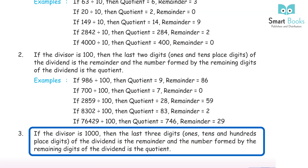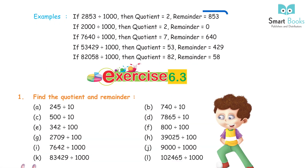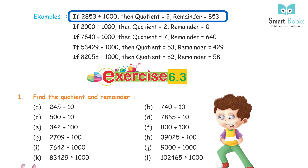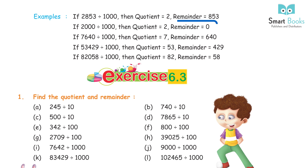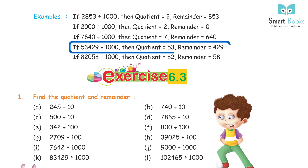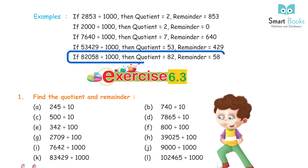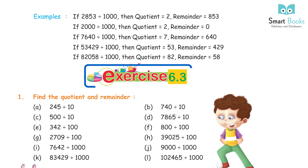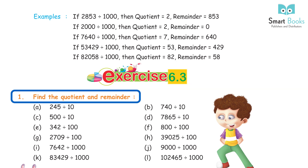Rule 3: if the divisor is 1000, the last three digits (ones, tens, and hundreds place) form the remainder, and the remaining digits form the quotient. Examples: 2853÷1000 → quotient 2, remainder 853; 2000÷1000 → quotient 2, remainder 0; 7640÷1000 → quotient 7, remainder 640; 8205÷1000 → quotient 8, remainder 205.